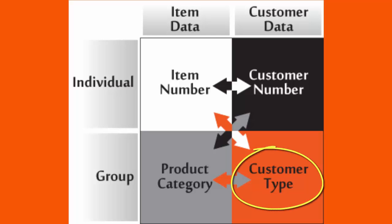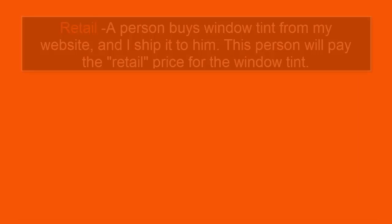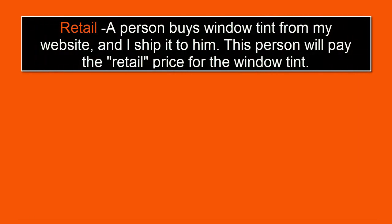To finish out that column, each customer fits into a customer type. Although these are user defined, we have created three categories for explanation purposes. Suppose I sell window tint on my website. The first category of customers are retail — these are customers who buy window tint from my website and I ship it to them.